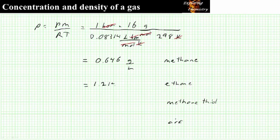1.214, 1.942, and 1.169, all with units of grams per liter.